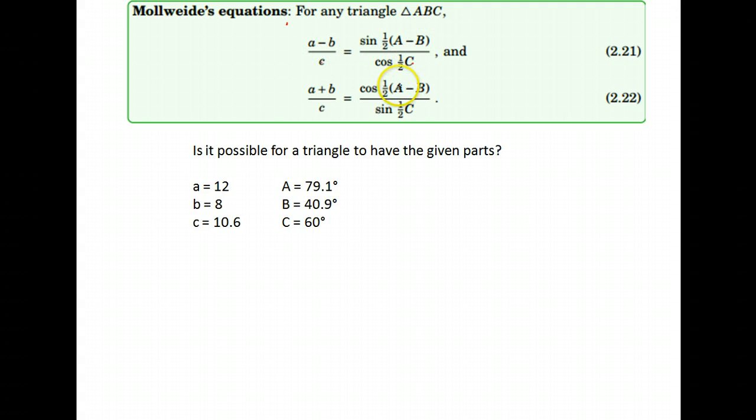What we are going to do is notice there's two equations - you can use either one. Either one will give the same result. What we need to do is put our values into this equation. I'm going to use the top one. If the two sides of the equation come out equivalent, then I know that yes, it is the parts of a valid triangle.